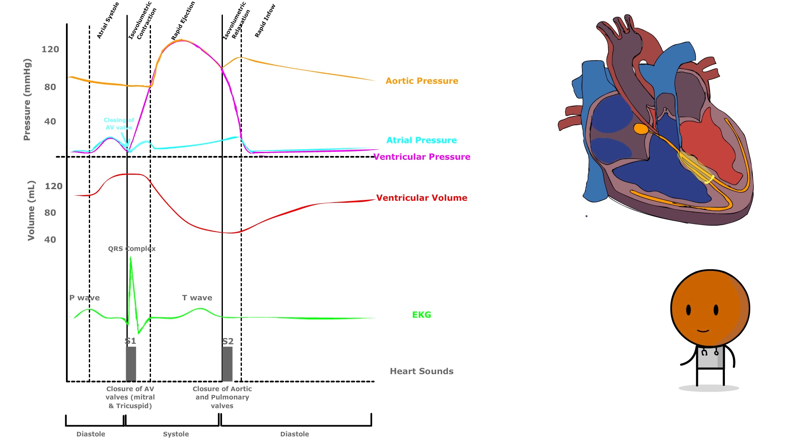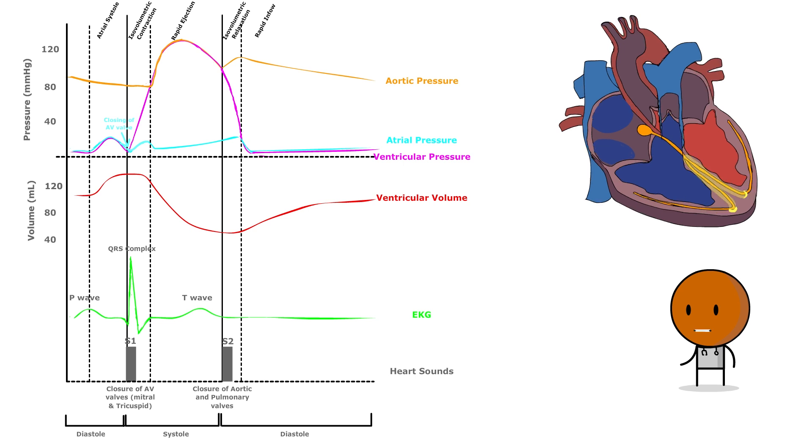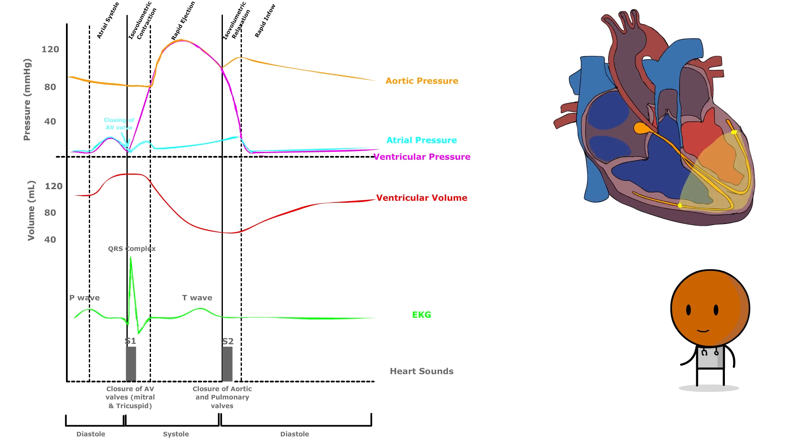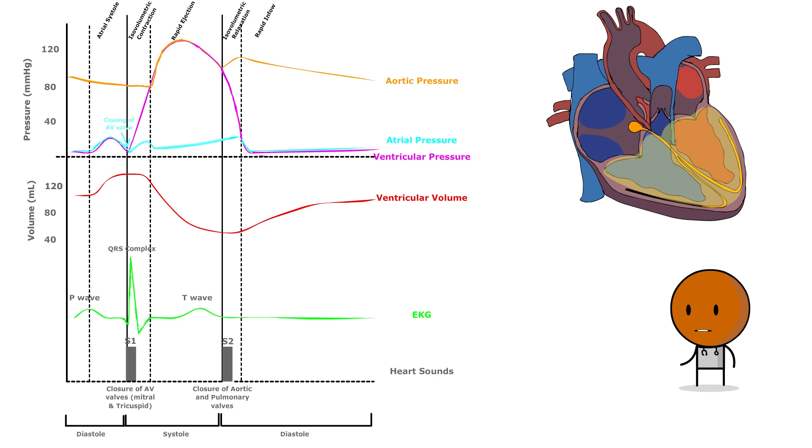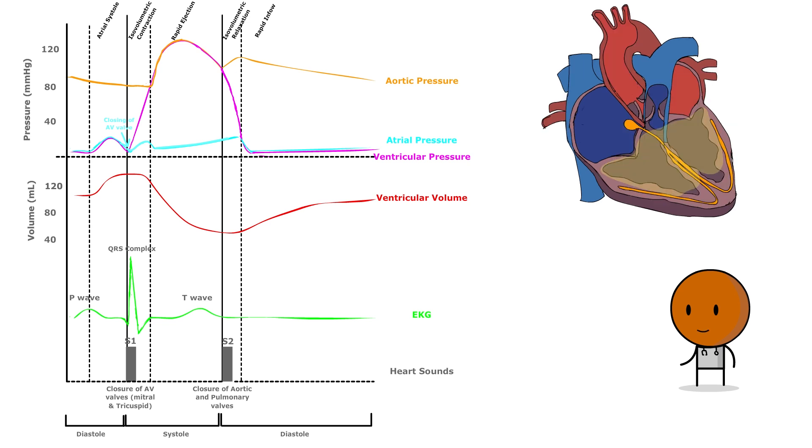Phase four, ventricular ejection. During ventricular systole, the atria continue to relax and fill with blood from the pulmonary and systemic circulation, which leads to a gradual rise in atrial pressure. However, since the AV valves are closed, this increase in pressure is moderate.